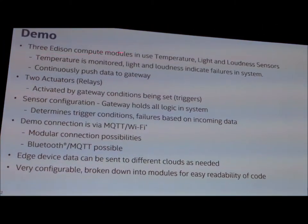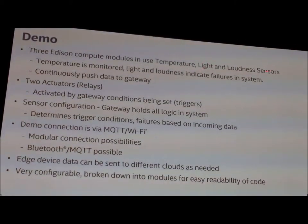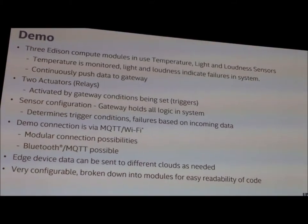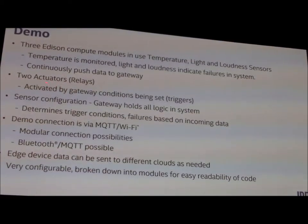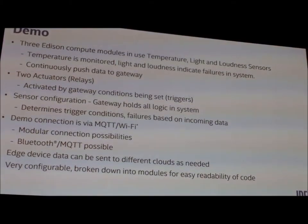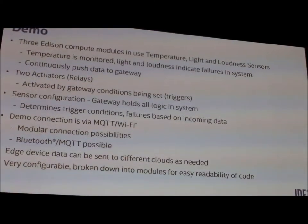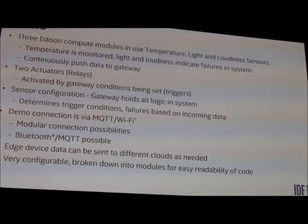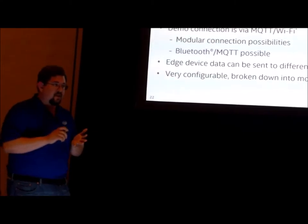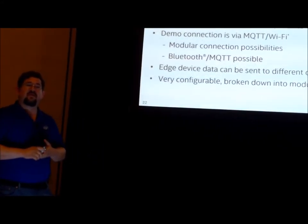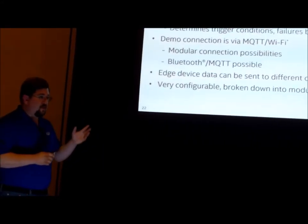There are three Edison compute modules: one controls temperature, one controls light, and one controls the refrigerator and loudness sensor. The relays are controlled solely from the gateway, as are the sensors. All data goes up to your choice of clouds — we currently enabled Amazon Kinesis, Microsoft Azure, IBM Bluemix, and Google Datastore. The demo has a pluggable architecture so you can write your own module to push data to whatever cloud you want.